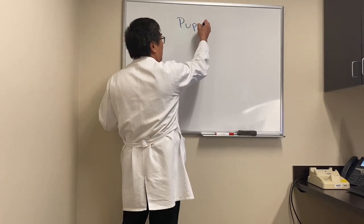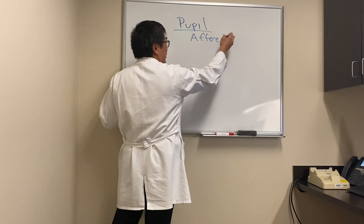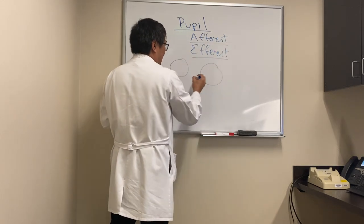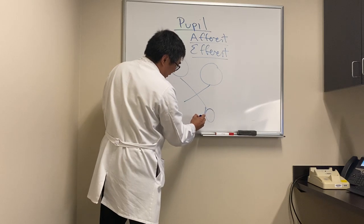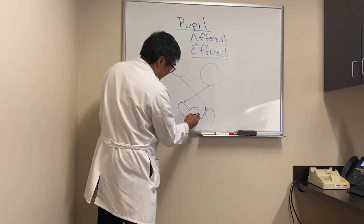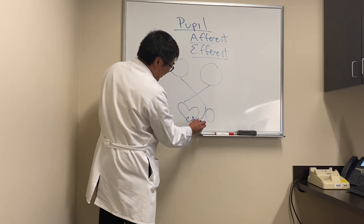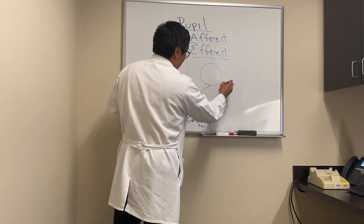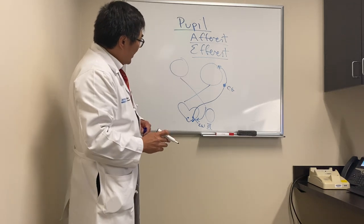Today we're going to be talking about the pupil. There are two pieces: the afferent pathway, which is the light going in, and the efferent pathway, which is the motor response. The classic diagram starts with the eyeballs, the optic nerve, the chiasm, and before it reaches the geniculate body, the pupil fibers come off the optic tract and go to the dorsal midbrain. Those dorsal midbrain centers control the pupil efferent pathway at the Edinger-Westphal nucleus of the third cranial nerve, which then carries the pathway to the ciliary ganglion.